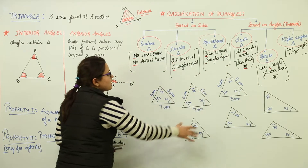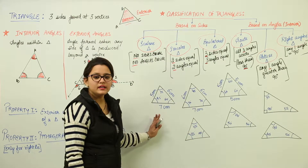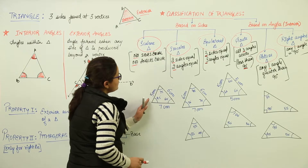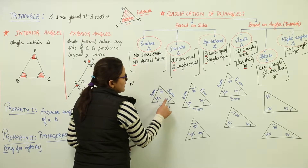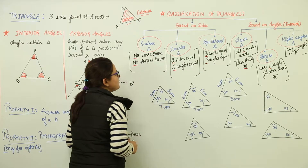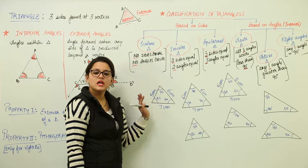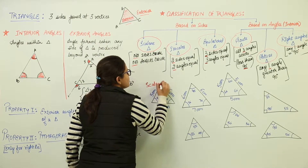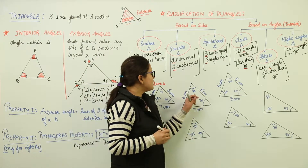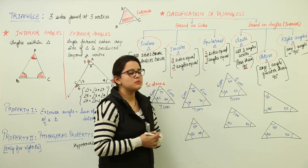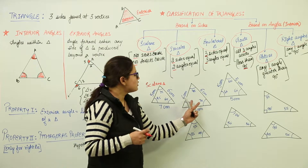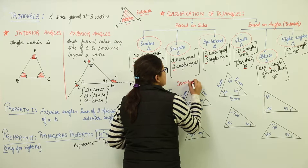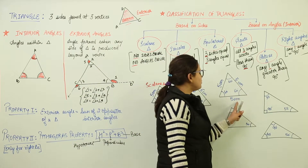Let me identify some triangles with different measurements. The first has angles 75°, 45°, and 60°, and sides 5, 6, and 7 cm — all angles and sides are different, so this is a scalene triangle. The next has angles 40°, 70°, and 70°, and sides 6, 6, and 7 cm — two angles and two sides are equal, so this is an isosceles triangle.